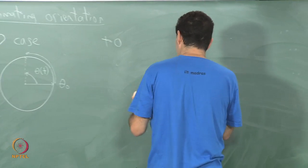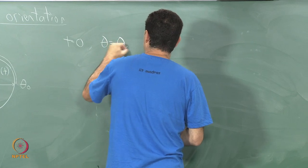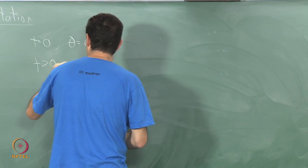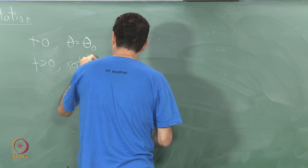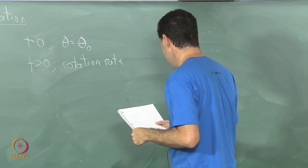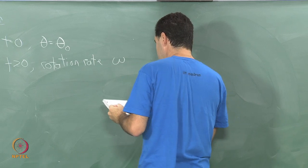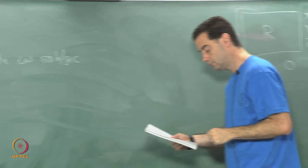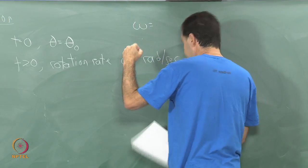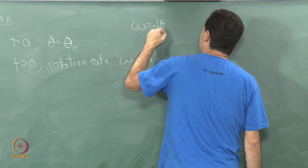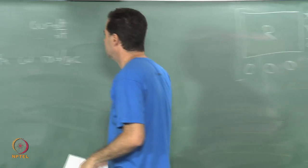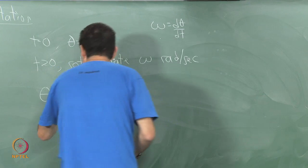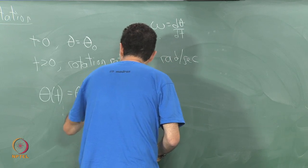At time t equals 0, theta equals theta-0, and at t greater than 0 it has a rotation rate. Let's say it's constant to start — rotation rate omega in radians per second. Using calculus, omega is just d-theta/d-t, the angular velocity. So if that's the case, theta of t is just whatever my initial theta is plus omega times t.